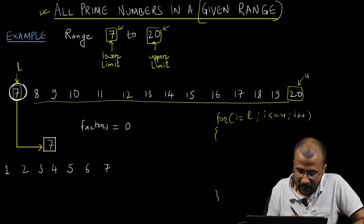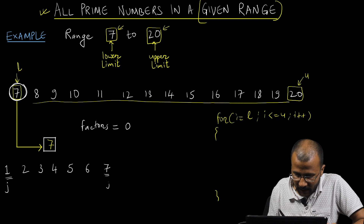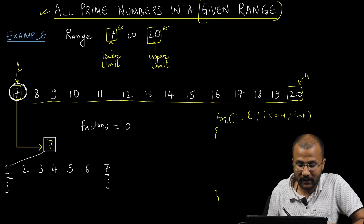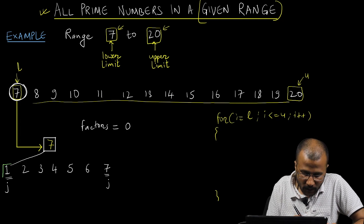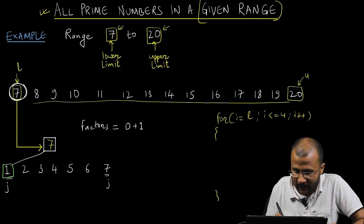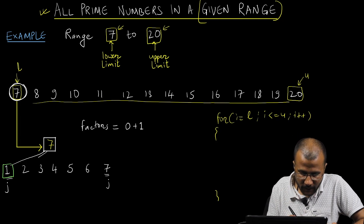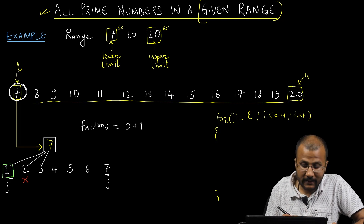Then I will divide 7 by numbers starting from 1 to 7 — let's say this is J. J starts at 1 and the last value of J is 7. I divide 7 first by 1 — 7 is divisible by 1, so 1 is a factor of 7, and the number of factors is incremented by 1. Then I try to divide 7 by 2 — it is not divisible, so 2 is not a factor. Similarly, dividing 7 by 3 — not divisible, so 3 is not a factor.